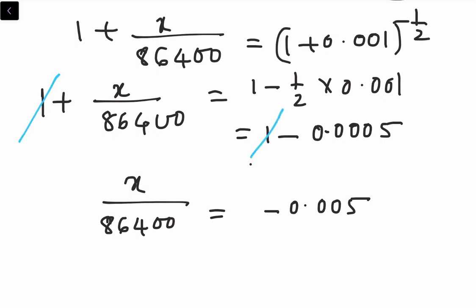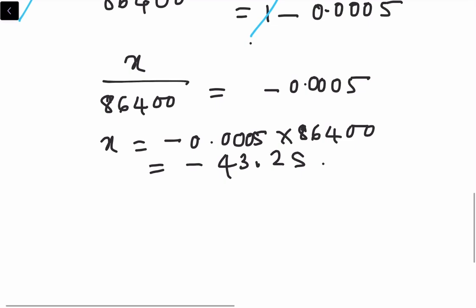Therefore it will be x is equal to minus - sorry, here one more zero - minus 0.0005 into 86,400. That is equal to minus 43.2 seconds. So that is the error. Therefore total error x is equal to minus 43.2 seconds.